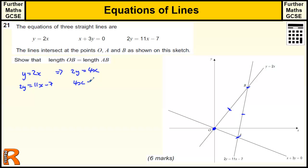So I've got 4x equals 11x minus 7. So take away the 4x to get 7x. Add the 7 to get 7. So x equals 1. And therefore, y would equal, when x equals 1, y equals 2.